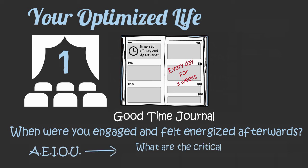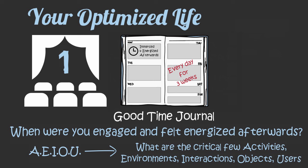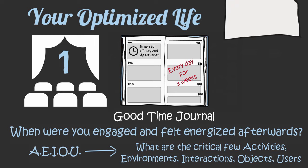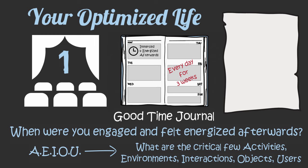Use the AEIOU technique. What activities were you doing? What environment were you in? Who were you or were you not interacting with? What objects were you using? And what users were you helping? As in, was there a specific person you were doing work for? If you complete your good time journal at the end of every day for the next three weeks, you'll start to see a consistent pattern of activities that engage you and energize you. Now imagine a life over the next five years where you find a way to do more of what engages you, like Michael did.